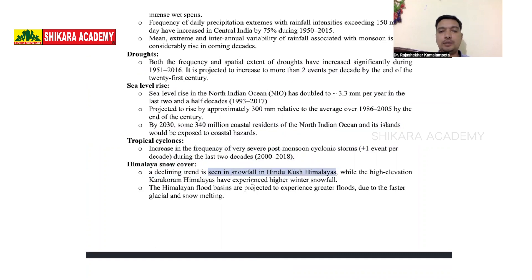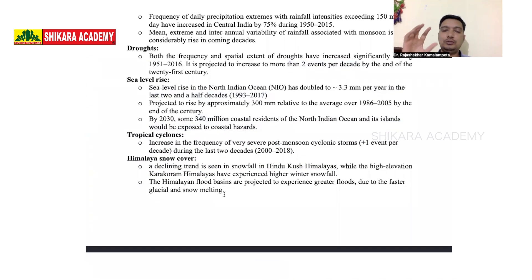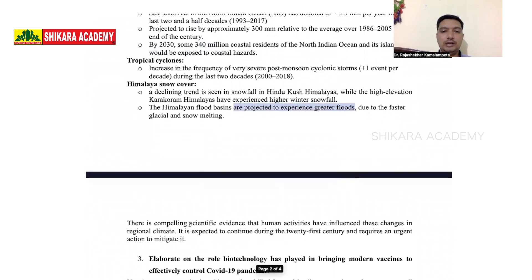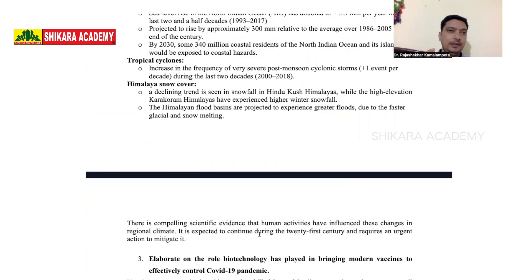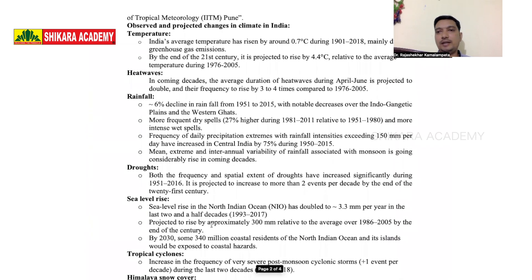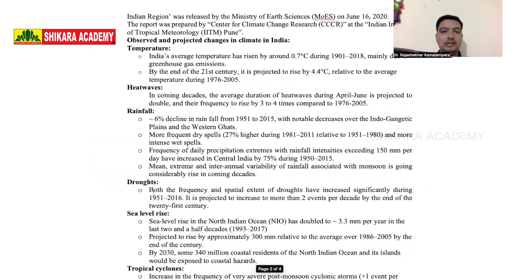In other parts of the Himalayas like the Karakoram, winter snowfall patterns will become uneven. Flooding is going to be immense. There is compelling scientific evidence that human activities are mainly responsible for this climate change, and by the 21st century it will have a huge impact on Asian countries, especially India. You should mention this summary selectively covering rainfall, temperature, and maximum diversity in your answer.